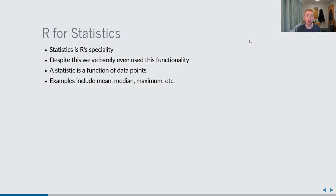R is a language originally intended for statistics and has a very wide scope of statistical capabilities. A statistic, by a simple definition, is a function of data points. Given a load of data points, you could calculate the mean, the median, or the maximum — that is a statistic. We can group these into a few categories, the first being measures of location: statistics that say something about where your data is centered on a number line.